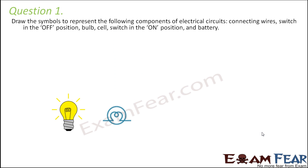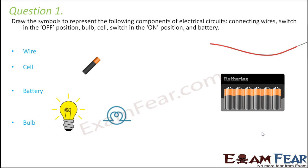Question number one: Draw the symbols to represent the following components of electrical circuits — wires, cell, battery, bulb, and switch in on and off position.